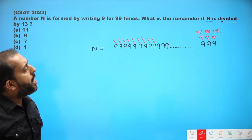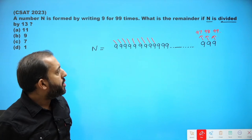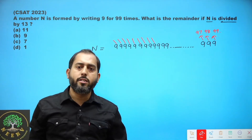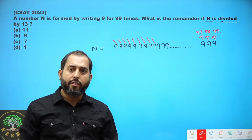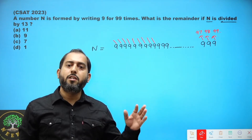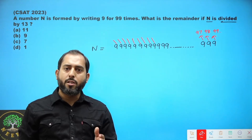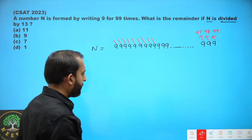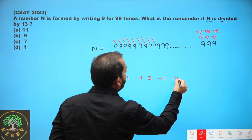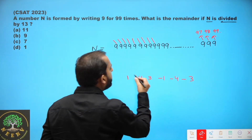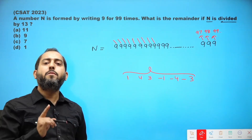Now we are looking for the remainder when this n is divided by 13. So in this case we have to utilize the divisibility rule of 13. Now what is the divisibility rule of 13? Like the divisibility rule of 7, we have a set of numbers associated with the divisibility rule of 13, and those numbers are 1, 4, 3, -1, -4, -3. Remember these 6 digits associated with the divisibility rule of 13.